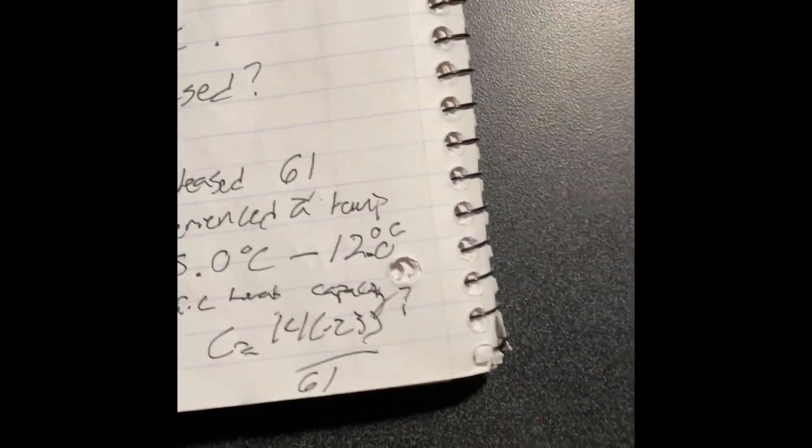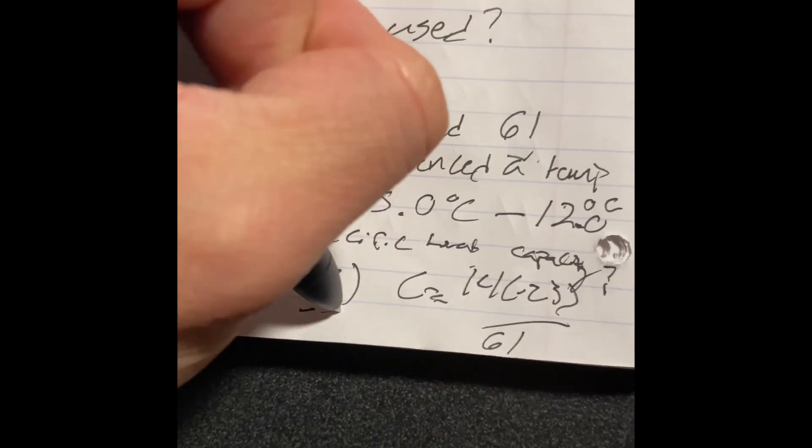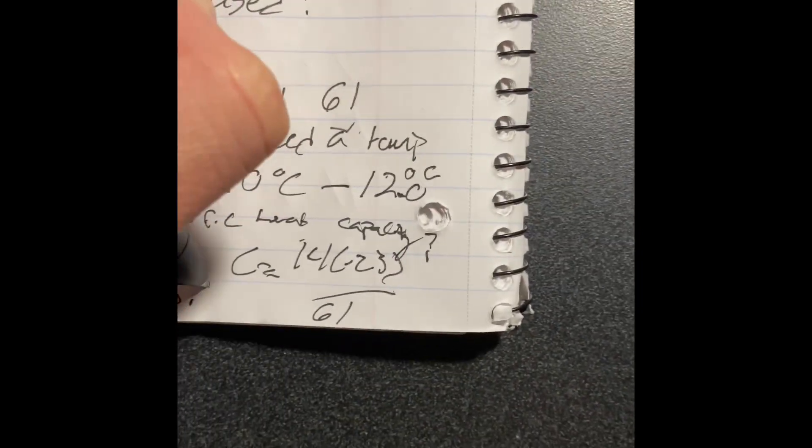So, you end up getting the specific heat capacity is negative 5.28.